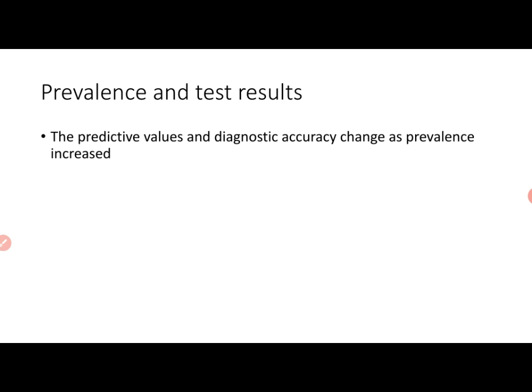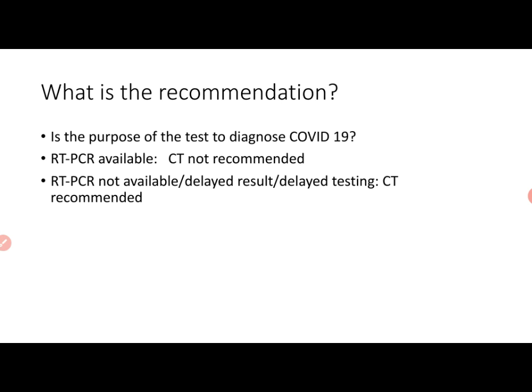So we have seen that predictive values and diagnostic accuracy change as prevalence increases. Moving forward, if the purpose of the test is to diagnose COVID-19, chest imaging is not the primary modality — RT-PCR is a better modality with better diagnostic effectiveness, so we wouldn't recommend chest imaging in that situation.